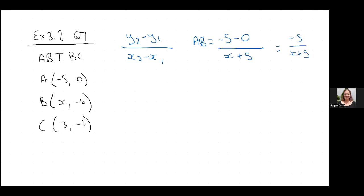All right, let's look at BC now. Same thing. I'm going to do negative 2 plus 5 because it's minus negative 5, and then I do 3 minus x, which gives me 3 over 3 minus x.